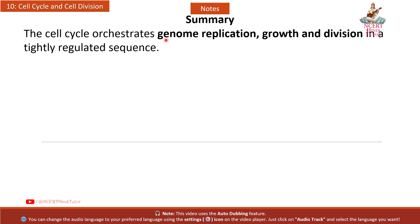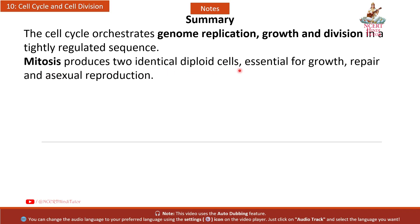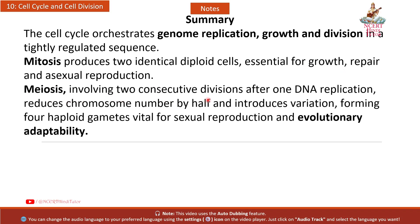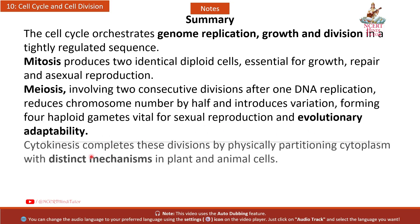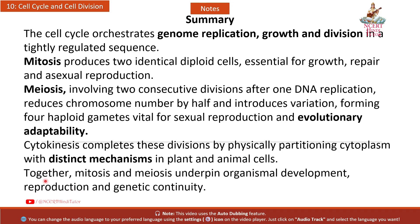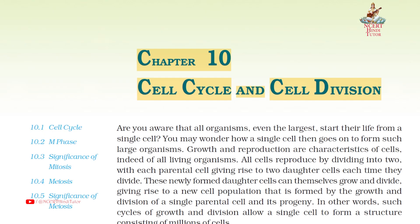Summary: The cell cycle orchestrates genome replication, growth, and division in a tightly regulated sequence. Mitosis produces two identical diploid cells, essential for growth, repair, and asexual reproduction. Meiosis — involving two consecutive divisions after one DNA replication — reduces chromosome number by half and introduces variation, forming four haploid gametes vital for sexual reproduction and evolutionary adaptability. Cytokinesis completes these divisions by physically partitioning the cytoplasm, with distinct mechanisms in plant and animal cells. Together, mitosis and meiosis underpin organismal development, reproduction, and genetic continuity.